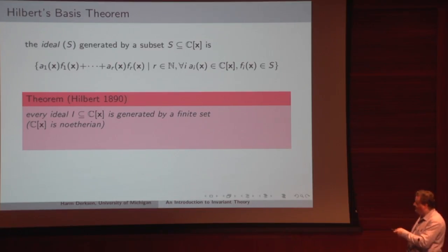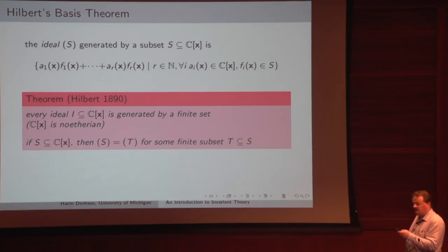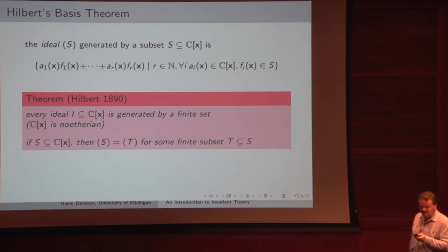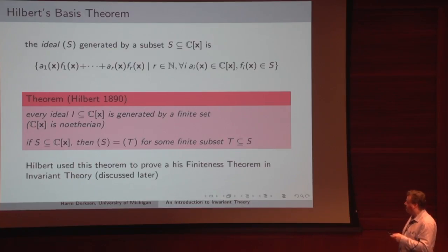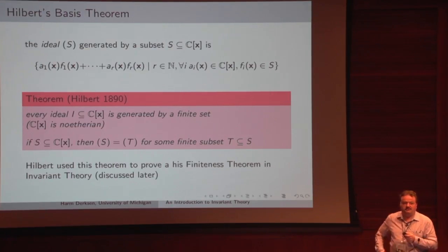Hilbert proved this in a 1890 paper on invariant theory, using the theorem to prove a statement about invariant theory. Nowadays we say the polynomial ring is Noetherian. This theorem also implies something stronger: for any subset S of the polynomial ring, the ideal generated by S is finitely generated, and we can choose the generators from a finite subset of S. Hilbert used this to prove the finiteness theorem, which generalizes Gordan's theorem.